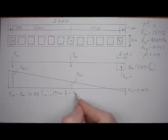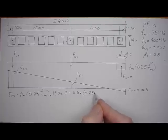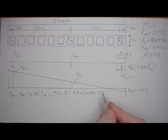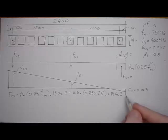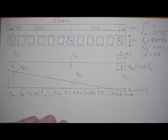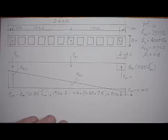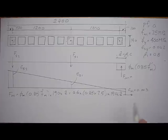Substituting φm = 0.6 and f'm = 7.5 MPa: the coefficient works out to 727, so the force in the masonry equals 727a, where 'a' is in millimeters.